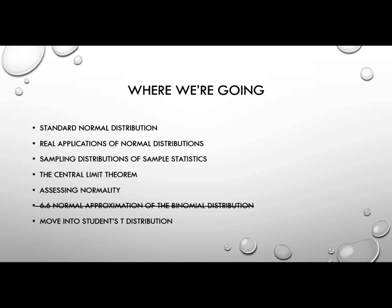We're going to look in this chapter at the standard normal distribution. We're going to look at real applications of them. We'll look at sampling distributions of sample statistics, talk about the central limit theorem, briefly assess normality. I have this section crossed out because you'll see once we get to the binomial distribution, we can approximate it with the normal distribution, so I've left that out. And then we're moving into students T at the end of this chapter. So I think I'll do this in two sections. I'm going to go through sections 1, 2, and 3, and then in the next video I'll do 4 and 5.